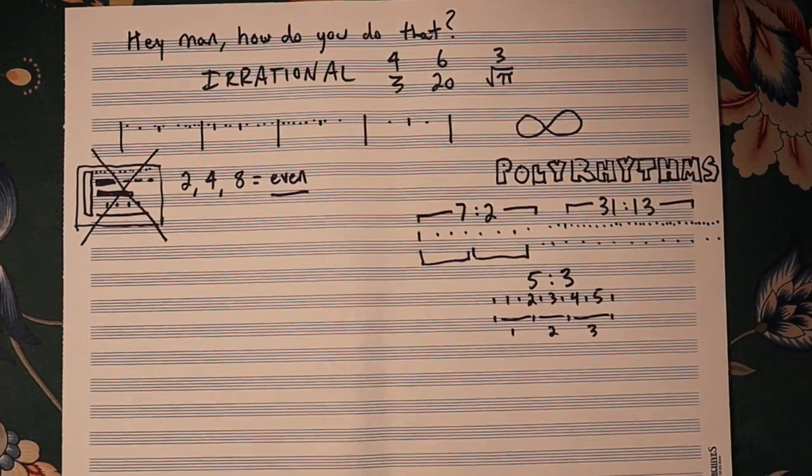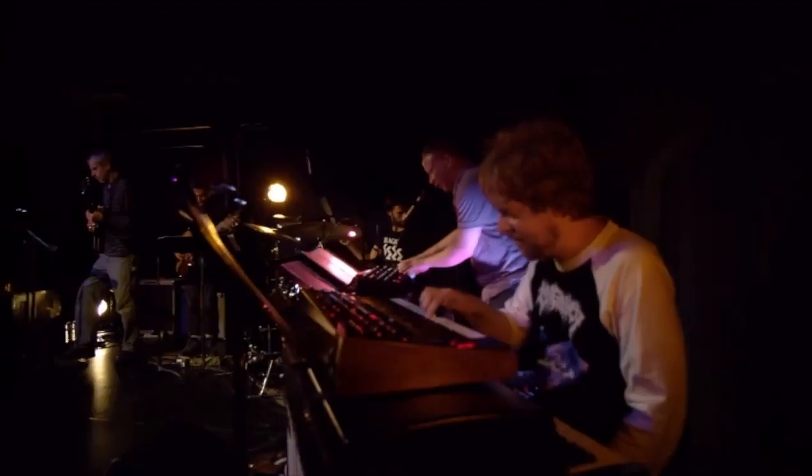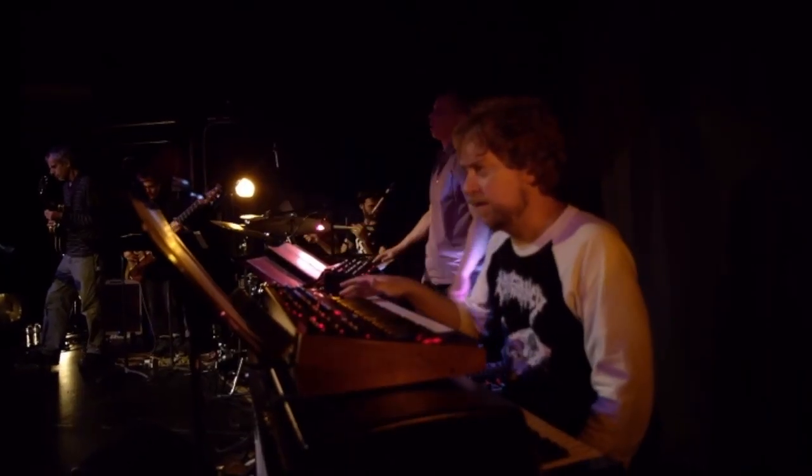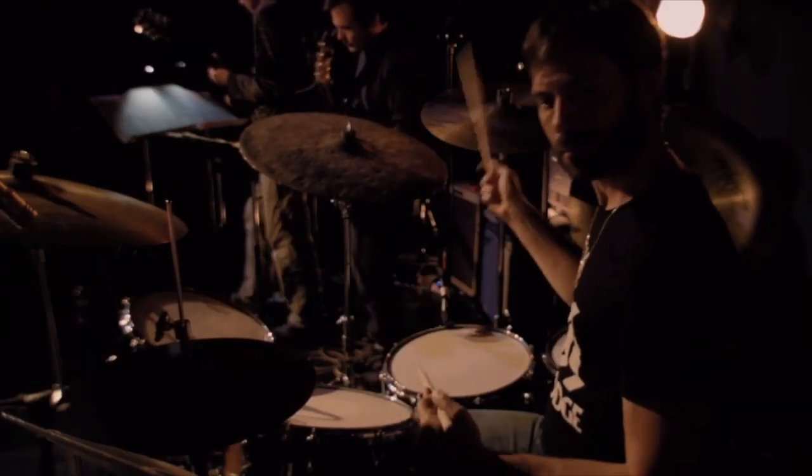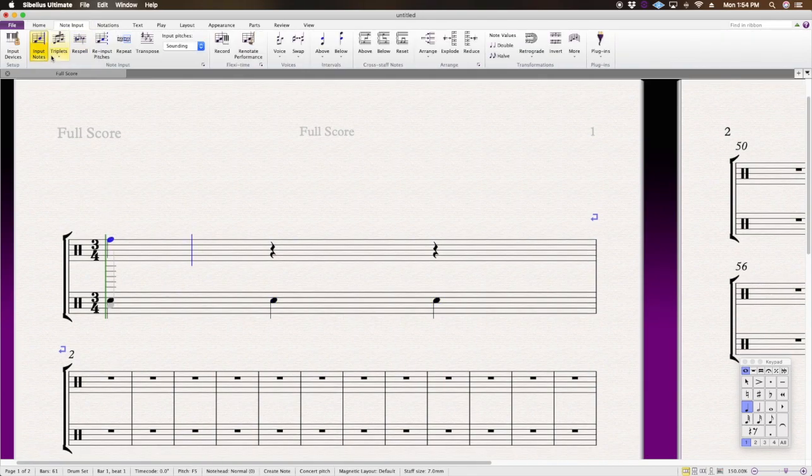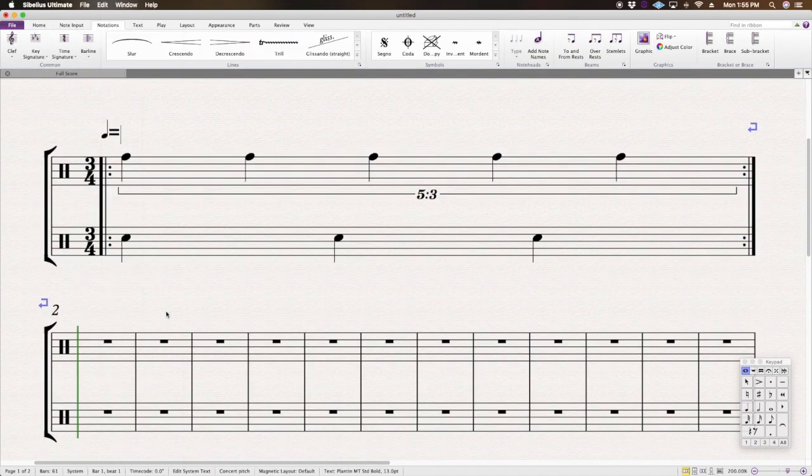If you're interested in hearing live musicians perform insane rhythmic somersaults, I'd recommend checking out pianist Matt Mitchell or drummer Dan Weiss. Now, 5 over 3 is a very groovy polyrhythm. Here's what that sounds like.